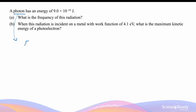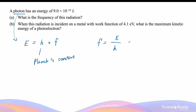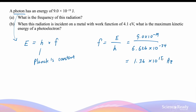The energy of a photon is given by the constant h, known as Planck's constant, multiplied by the frequency of light or radiation. To calculate the frequency of radiation, we divide the energy of the photon by Planck's constant. The value of Planck's constant is 6.626 times 10 to the power of minus 34, giving a frequency value of 1.36 times 10 to the power of 15 Hertz.